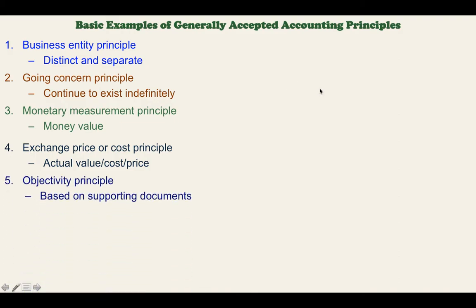Next is the objectivity principle. This means that we have to record transactions based on supporting documents. We cannot record a transaction without a document to support it. If we want to record the purchase of a car, then we have to have the invoice to demonstrate that there was really a purchase and the car is there.